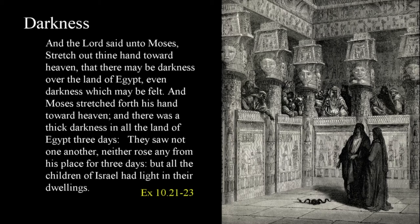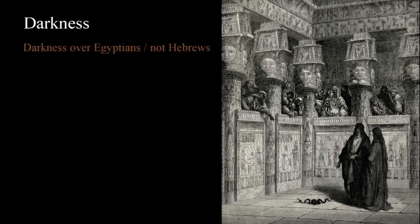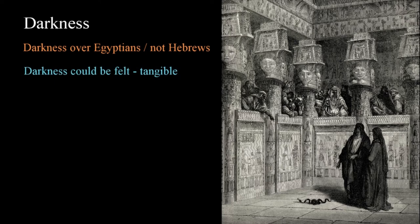They saw not one another, neither rose any from his place for three days, but all the children of Israel had light in their dwellings — Exodus 10:21-23. Notice the description of the darkness given in this passage. This wasn't just a lack of light. It's described as a thick darkness that could be felt, and was so heavy that none of the Egyptians attempted to move from where they were. The darkness was over the Egyptians, not the Hebrews, marking a line between the people of God and those who oppose the Lord. The darkness has a tangible, almost physical quality that the people could feel. There's a sense in which even darkness, an immaterial, intangible state, appears to have both non-material and physical properties.